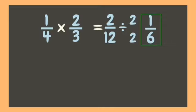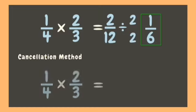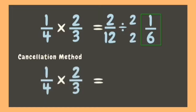Great job — it is so easy, right? Now I will show you another method that you will love: the cancellation method. In the cancellation method, instead of simplifying our final answer, we simplify the fractions inside the problem. We look for a numerator and a denominator which have a common factor. Here we can see that two and four have a common factor of two.